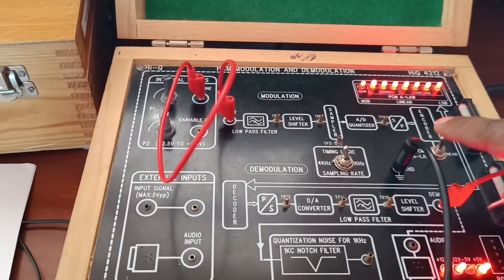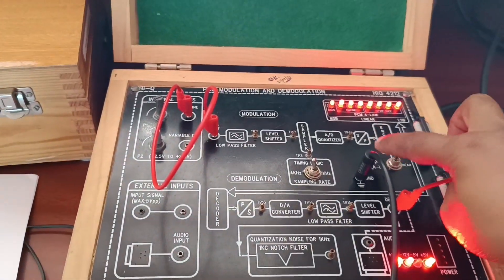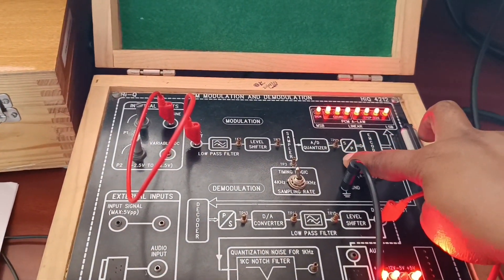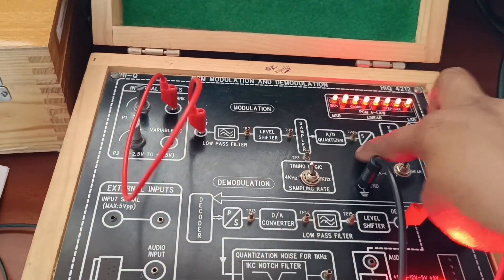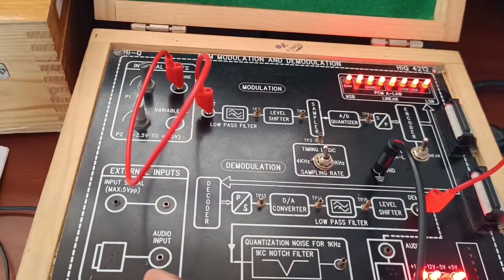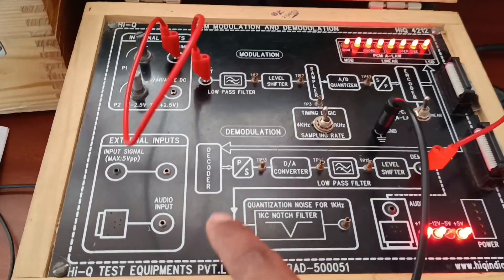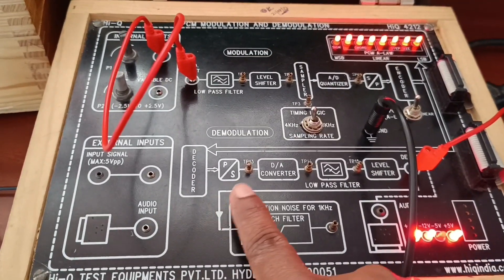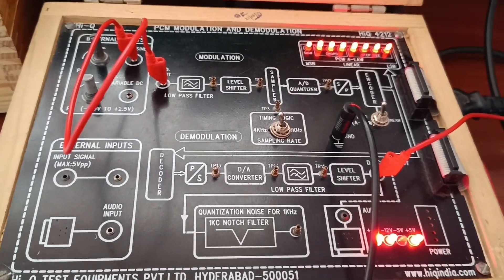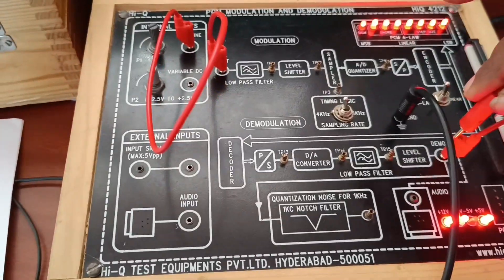Next, the same process. Internally connected - PCM output connected to the Demodulation block internally. No need to connect any wire. Again, reverse process. Take output from the Demodulation block from here.